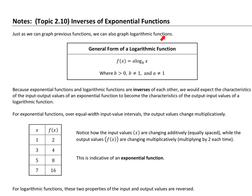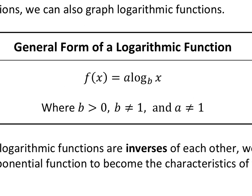We have never graphed a logarithmic function before in this class, so we're going to look at what it might look like. There is a typo on these notes. The general form of a logarithmic function is f of x equal to a times log base b of x. You have an a value, a b value, and possibly a vertical translation plus k at the end. It says b has to be greater than zero — your logarithm is not going to have a negative base. The base is also not going to be one. The common number for b is 10, so if you don't see a number for b, it's 10.